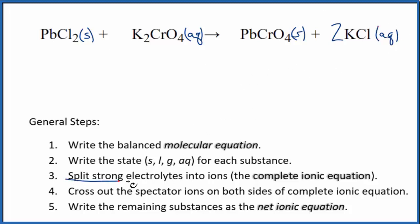Next, we can split the strong electrolytes into their ions, and that's going to give us the complete ionic equation. We can't split solids apart, so that's just going to be PbCl2. We'll write the states later. Potassium, group 1 on the periodic table, has a 1+, and the whole chromate ion is 2-.